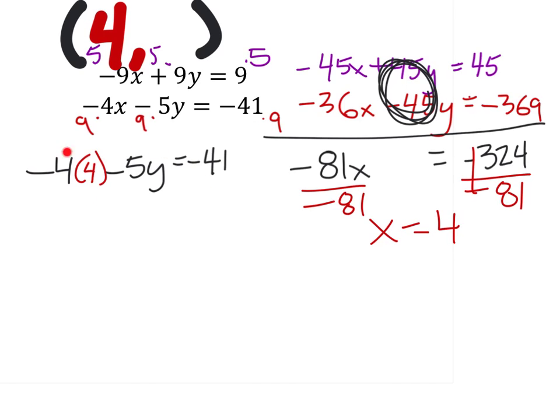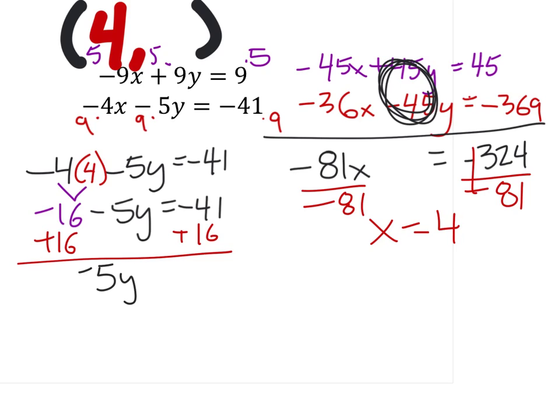So notice I've rewritten the equation here, but instead of x, I have a 4 there. And multiplying these two gives us -16. -16 - 5y = -41. Then to get rid of the 16, I'll add 16 to both sides, and that gives us -5y = -25. Then we'll divide both sides by -5 and get y = 5. So that value now goes into the coordinate pair as well.